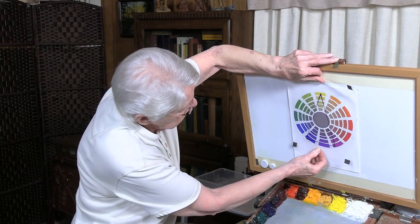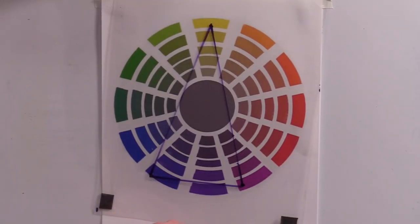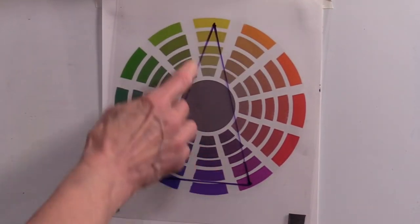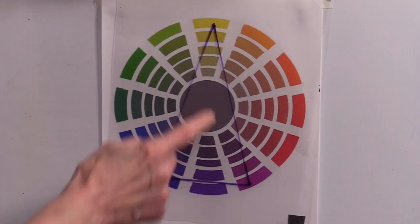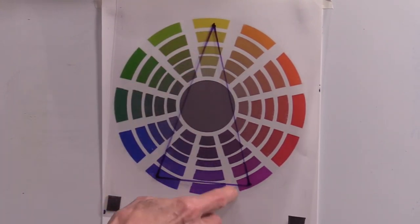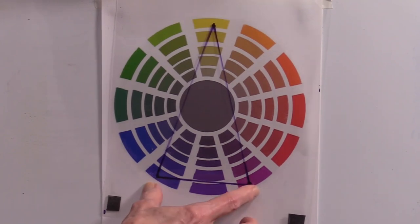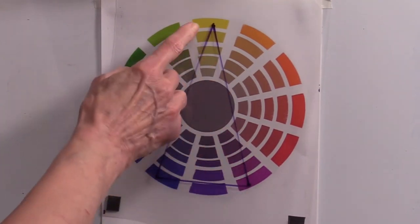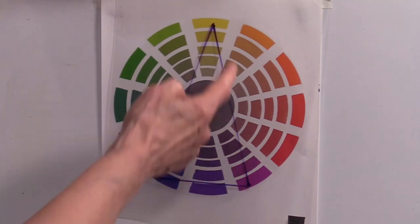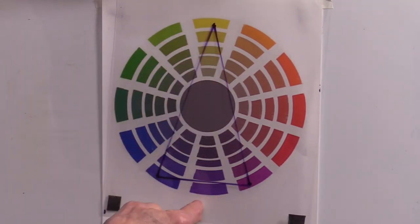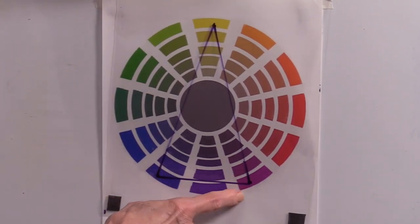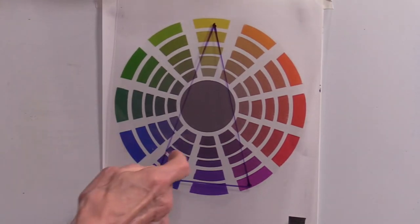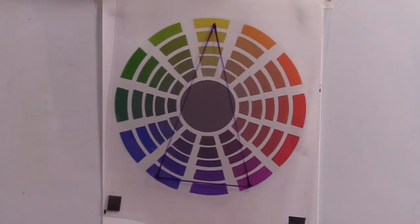And another one is called the split complementary scheme and that simply means if you find a complement, let's just go to the yellow for example. Now the complement of yellow is violet. When we have a split complementary scheme we go to either side of one of those and choose those colors. So for a split complementary scheme of yellow and violet, one option is yellow plus blue violet plus red violet. So it gives you a little bit more possibility and then you have all those colors that are in between.